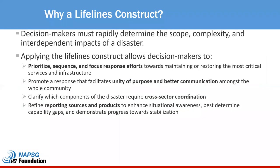Why did FEMA decide to implement the community lifeline construct? It helps minimize the complexity of emergency management as it enhances the ability to gain, maintain, and communicate situational awareness for the whole community during disaster response. The construct keeps focus on the most critical services to protect human life and property. Lifeline management encourages the whole community response by overcoming boundaries between government, non-governmental organizations, and the private sector, including infrastructure owners and operators. This operational coordination translates into efficient approaches to incident stabilization and the transition to recovery. In short, it helps decision makers prioritize, sequence, and focus response efforts toward maintaining or restoring the most critical services and infrastructure.